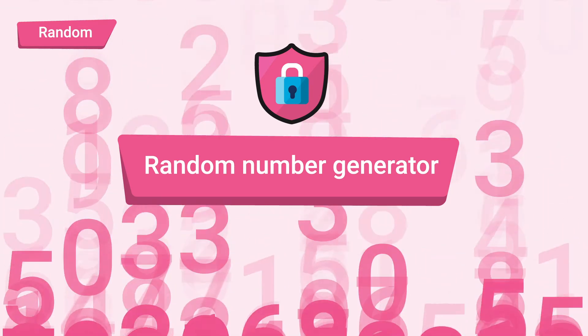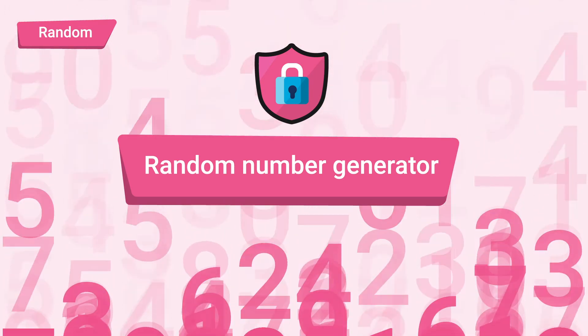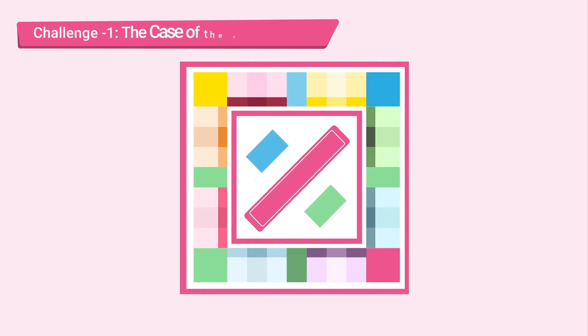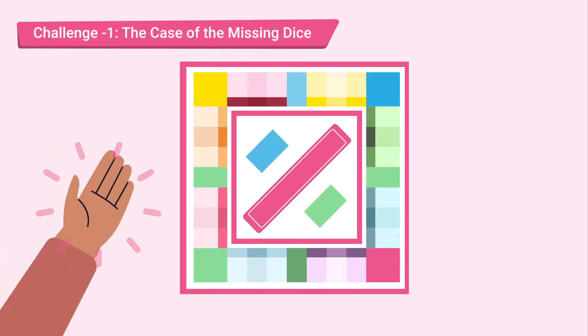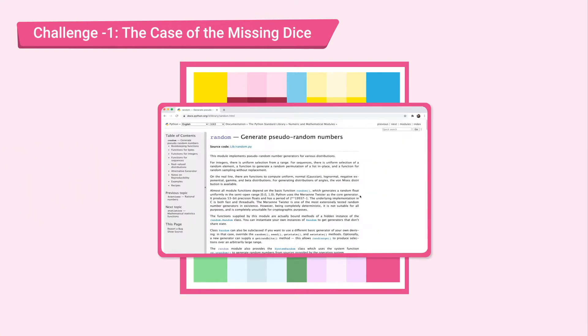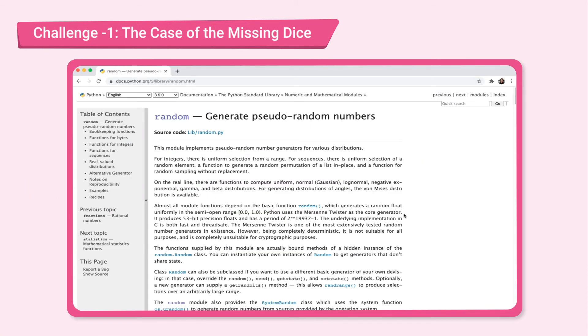Next, let's look at some challenges we can solve using the random module. Challenge 1. It's game night. Oh no, we're missing the dice. No worries. Let's use the random module to create a virtual die. We'll need something that will return a random number from 1 to 6 inclusive. Let's visit the documentation page to find what we need.